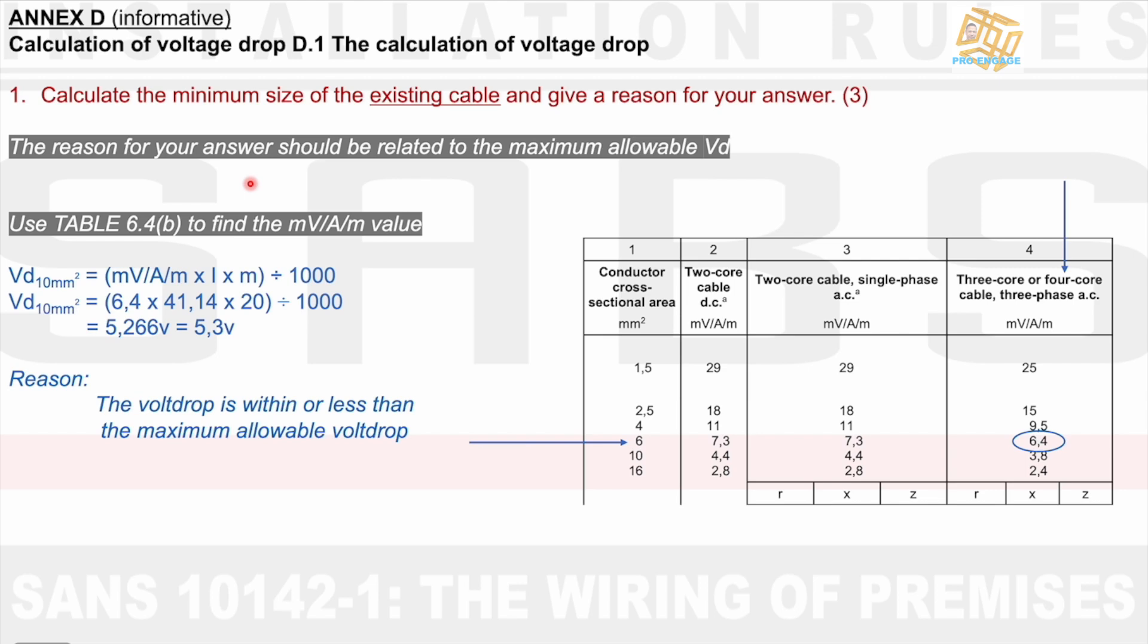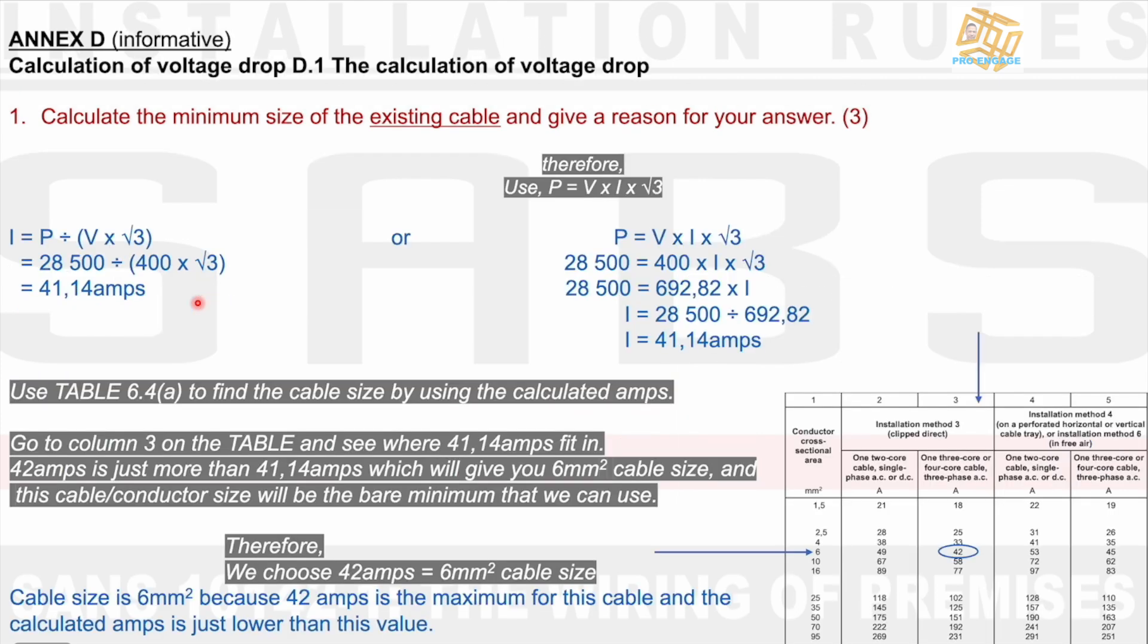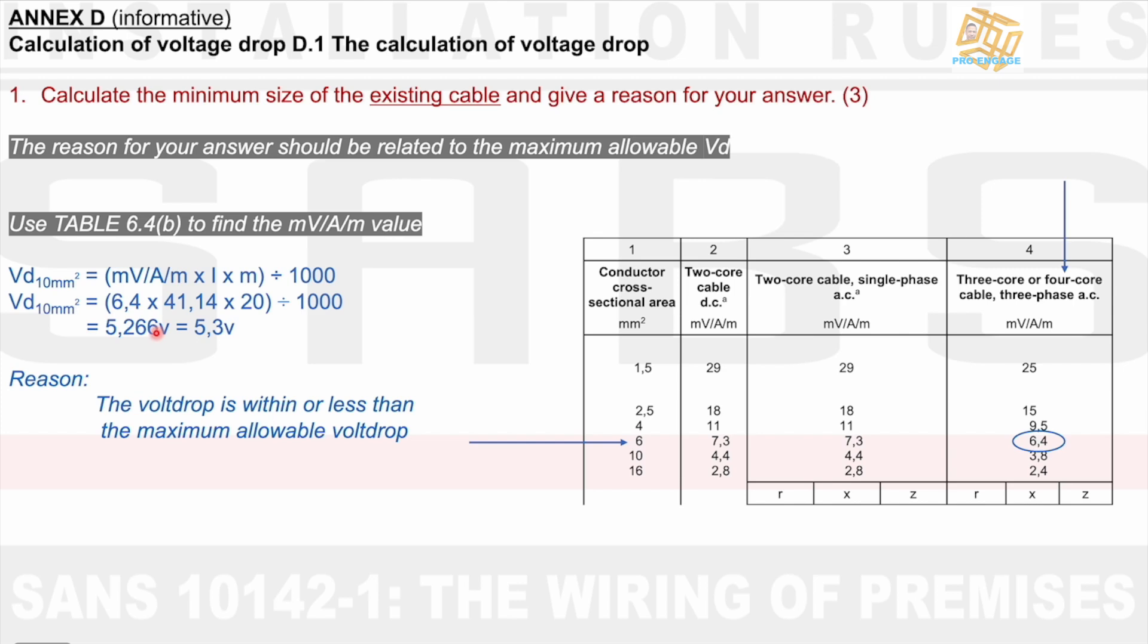We now need a reason for our answer. So a reason for using at least 6mm² cable would be to then use the 6.4 we found here and then injecting it into the cable using our amps that we've calculated, 41.14. And we then get a voltage drop of 5.266 volts, which adds up to, if we put one digit after the decimal, 5.3 volts. Reason, the voltage drop is within or less than the maximum allowable voltage drop. I am happy with this answer.